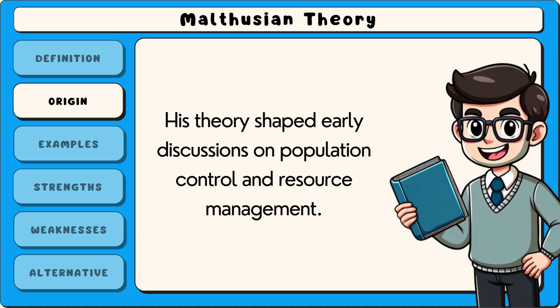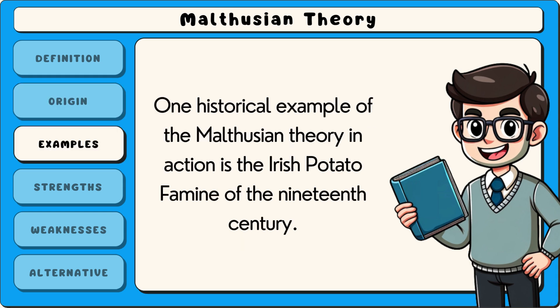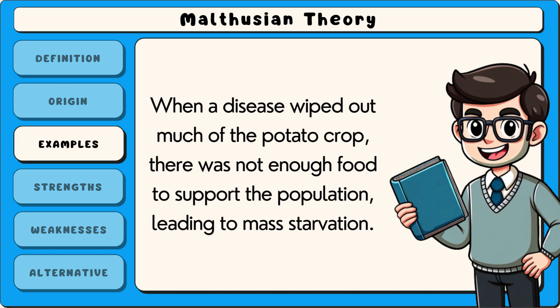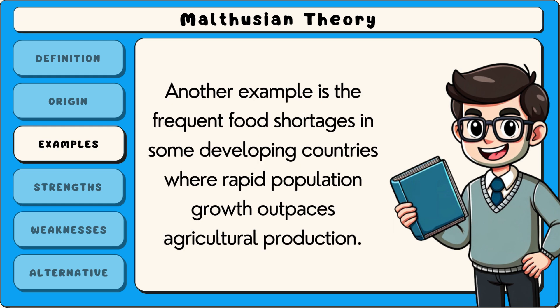His theory shaped early discussions on population control and resource management. One historical example of the Malthusian theory in action is the Irish potato famine of the 19th century. Ireland's population had grown rapidly, relying heavily on potatoes as a food source. When a disease wiped out much of the potato crop, there was not enough food to support the population, leading to mass starvation.